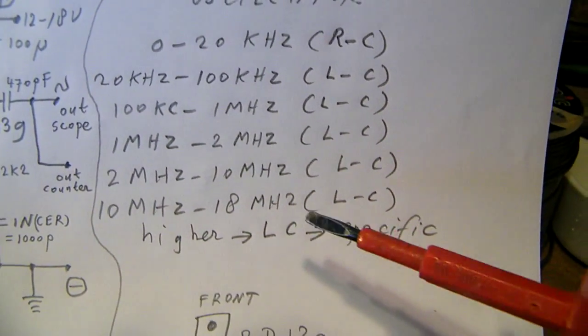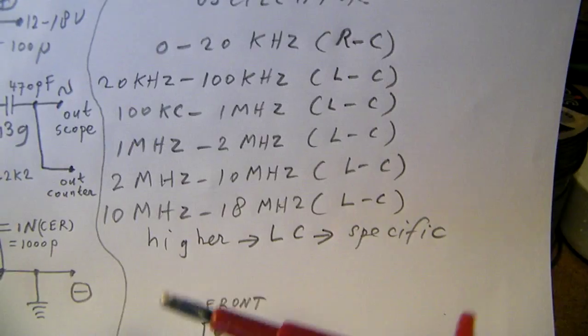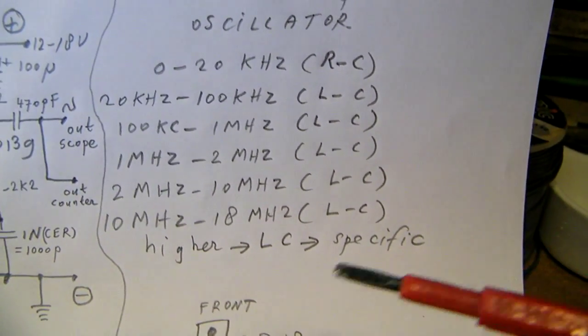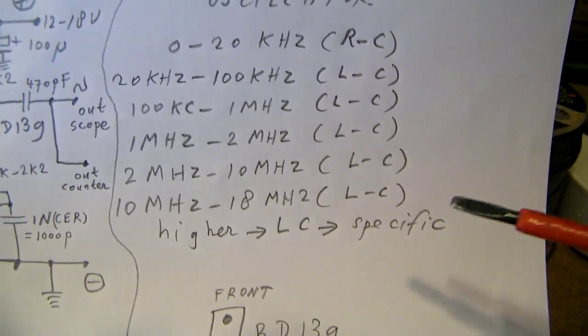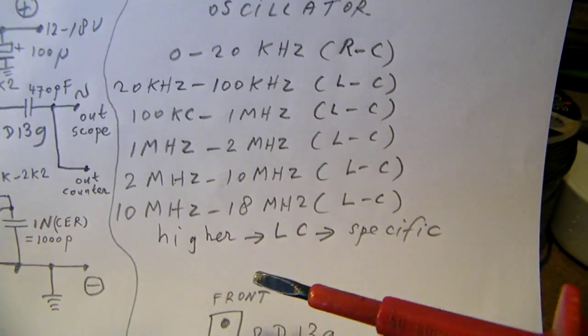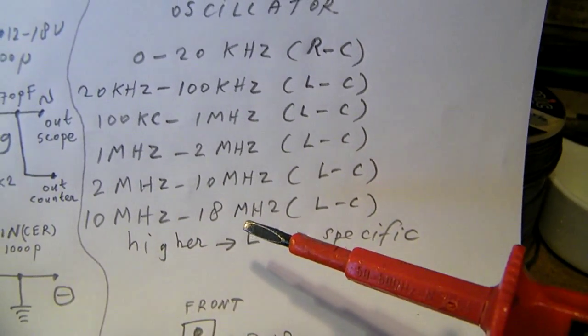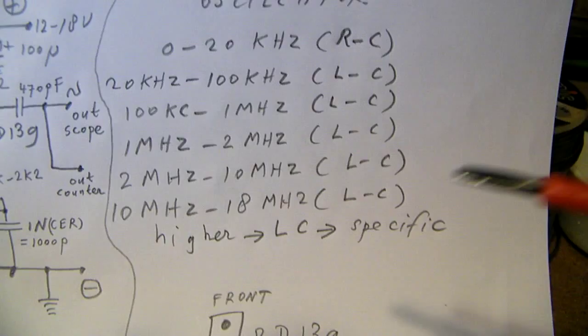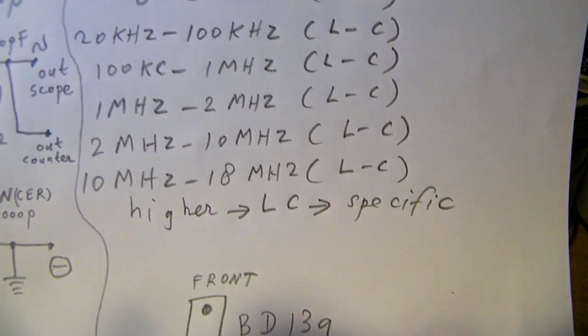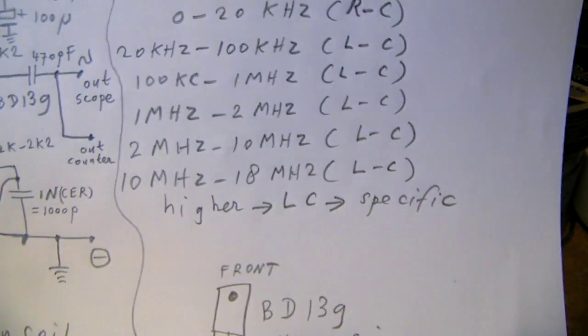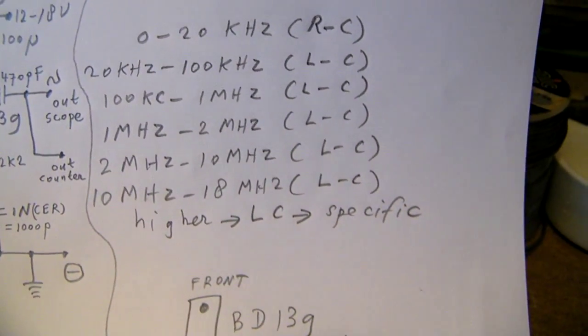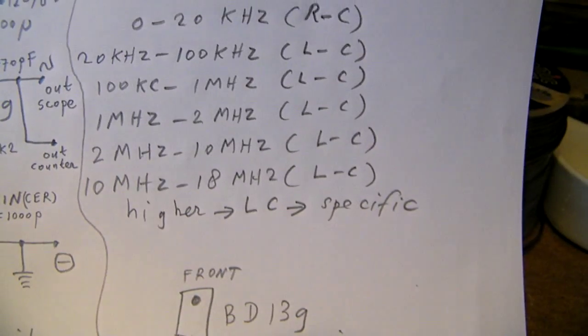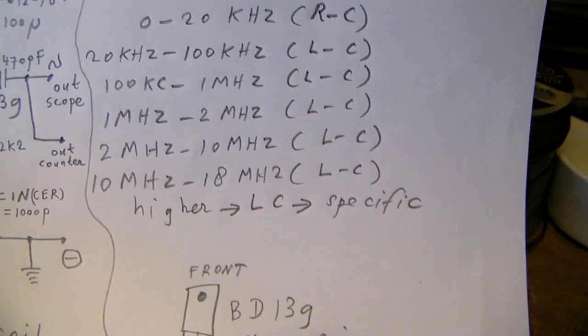When we go higher than eighteen megahertz it gets more specific. And it's very difficult to make a good oscillator that can be tuned for frequencies between eighteen megahertz and thirteen megahertz. So peculiar, specific circuits have to be made when you want to make a shortwave radio that works between eighteen megahertz and thirteen megahertz.